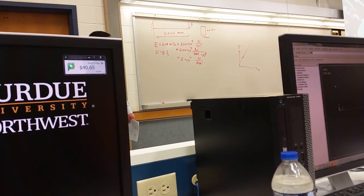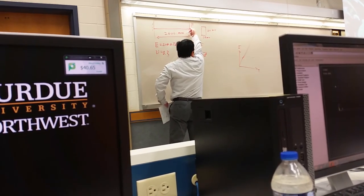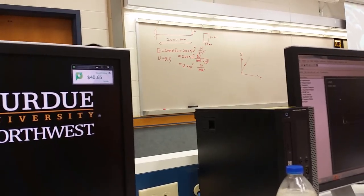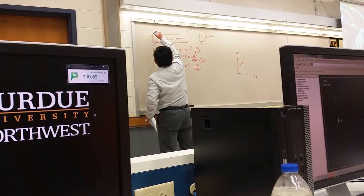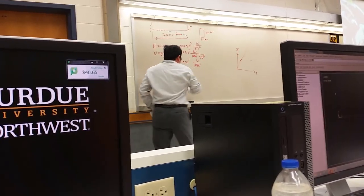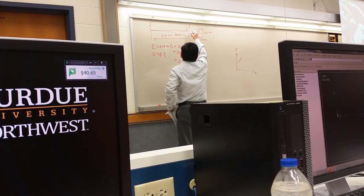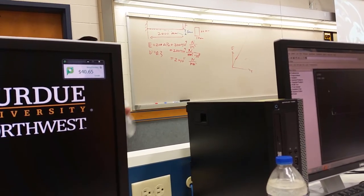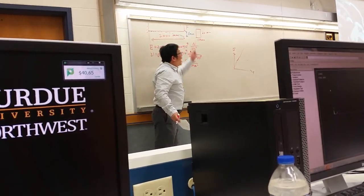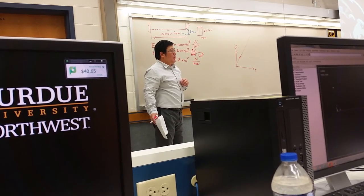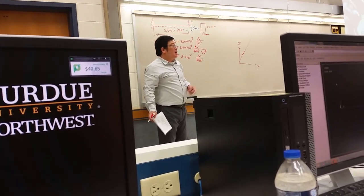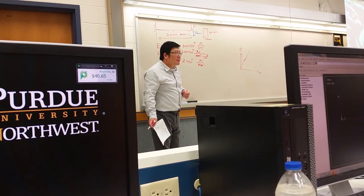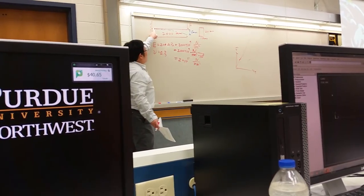First of all, due to the external loading, the member will deflect like that. You know the maximum deflection. Here is the maximum deflection. This is the maximum deflection. And I ask for maximum stress. Because deflection is related to stiffness. Stress relates to strength of material. So where is the maximum stress? You have to decide that. It is on the fixed end.